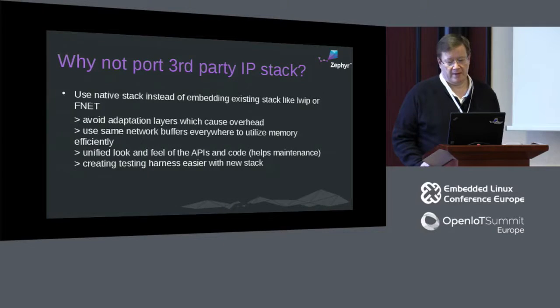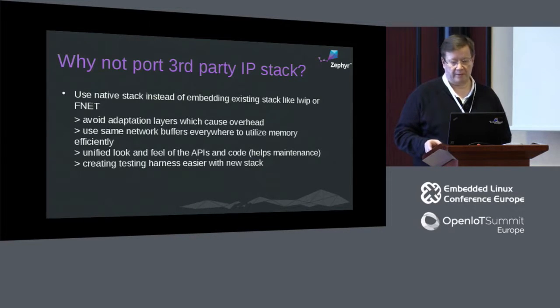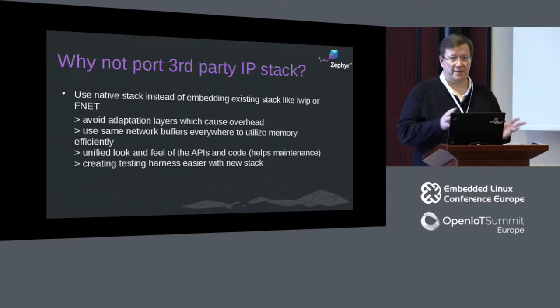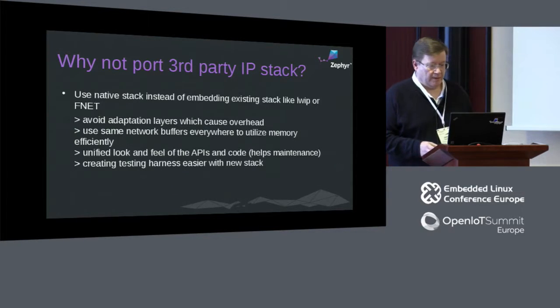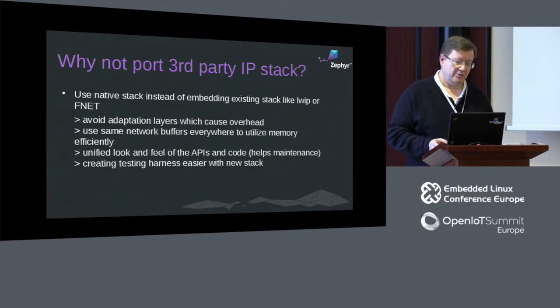There is one big issue if one wishes to use an existing third-party stack as a library: it requires use of adaptation layers to adapt the library to the host operating system. For example, FNET and Lightweight IP both provide hooks to enable them to be used in different environments. The extra adaptation layers cause some memory overhead because we need to map the buffering in these libraries to the native buffering available in Zephyr. If we don't have this adaptation layer, meaning we are deeply integrating the third-party stack into Zephyr, then usually the code needs to be heavily modified. So instead, we can just create the native stack.